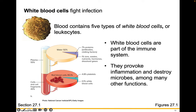White blood cells are important for fighting infection — that 0.1%. Blood contains five different types of white blood cells, or leukocytes. White blood cells are part of your immune system, and they provoke inflammation and destroy microbes, among many other functions.